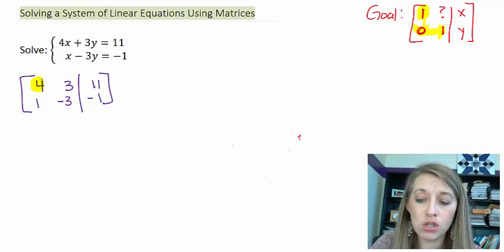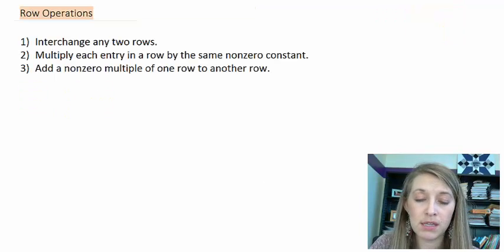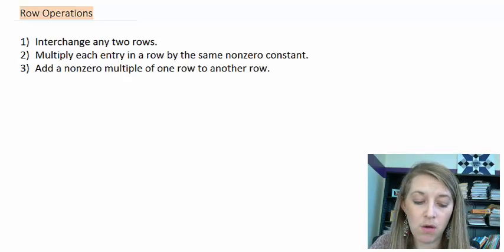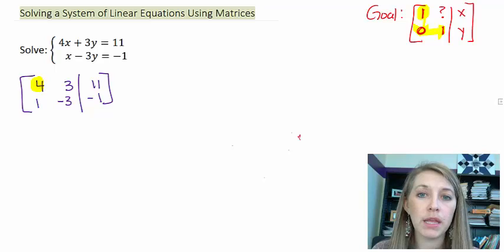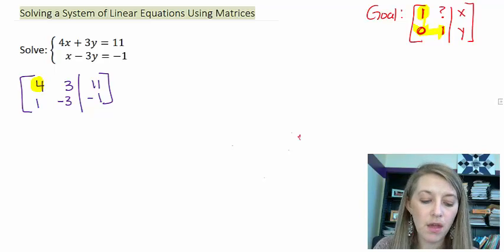Remember, I can only do really three things to get a 1 where this is. I can interchange any two rows. I can multiply a row by something that's not 0, and I can add a row or a multiple of a row to a different row. Let's go ahead and see what my easiest step is going to be.